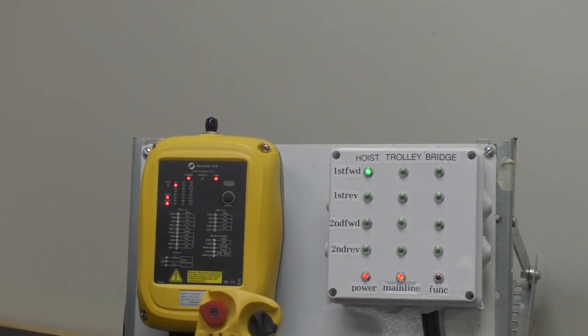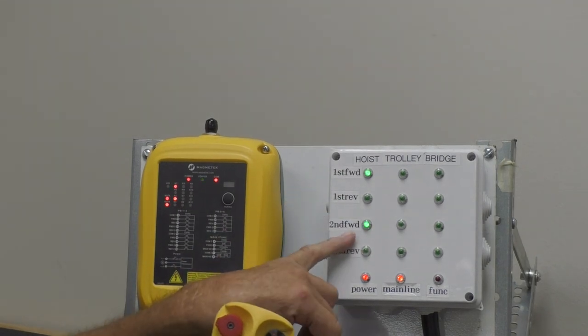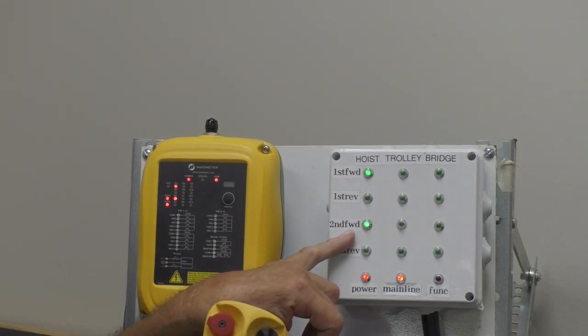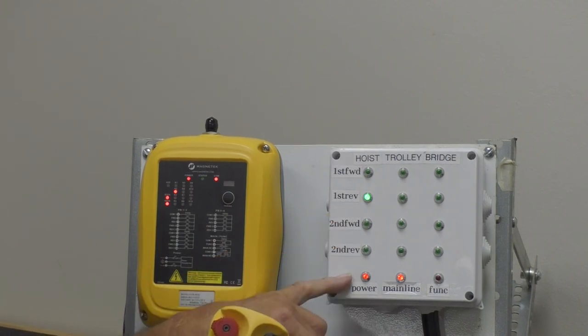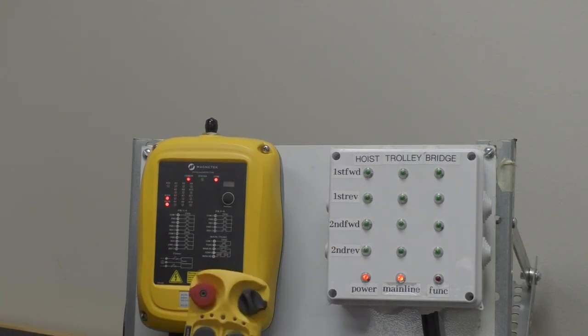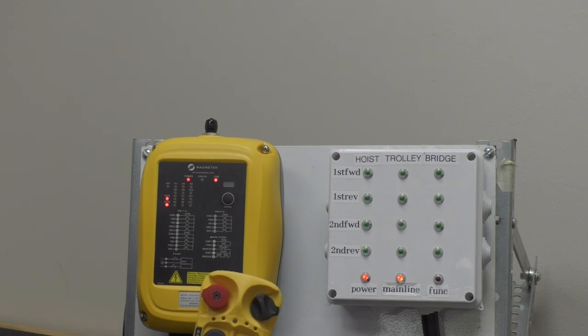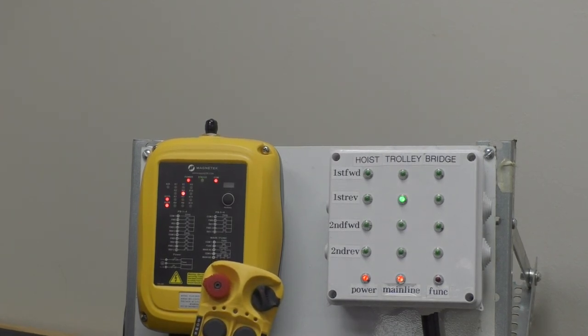Hoist up in low speed, down in low speed, down in low and high. Trolley left, second speed, right, second speed.